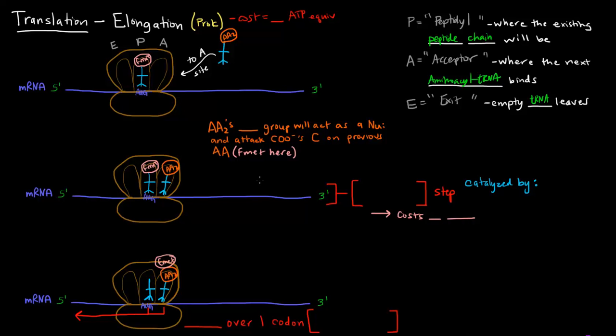then the elongation step can occur. What does the elongation step consist of? Amino acid number two - its amino group acts as a nucleophile and attacks the carboxyl carbon on the previous amino acid to form a covalent bond.